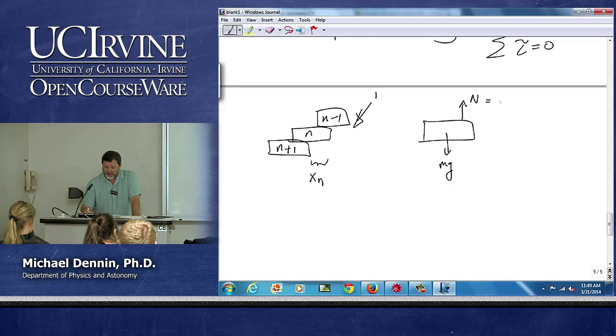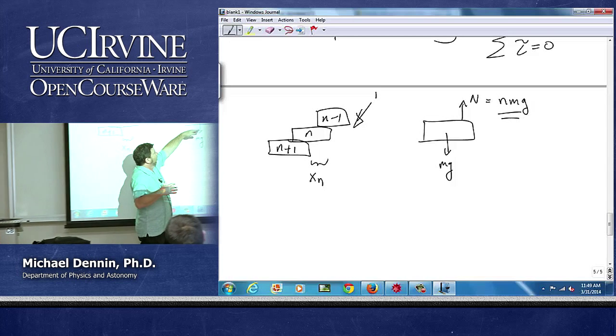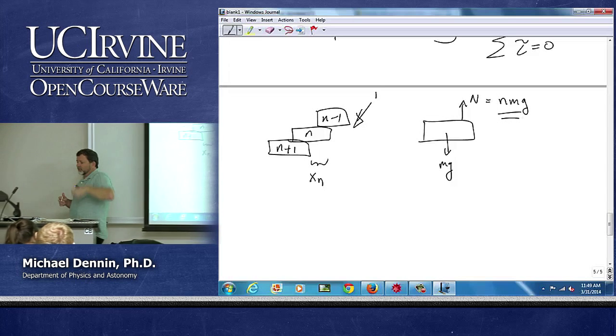And the normal force has a value of n times mg. That's the number of blocks sitting on top of it, right? The normal force up is based from all the blocks coming on top of it.